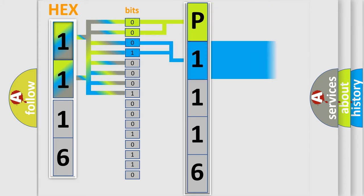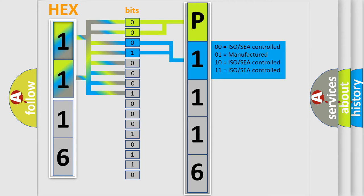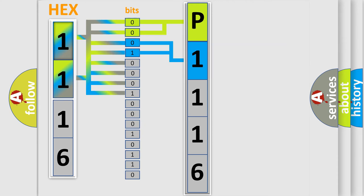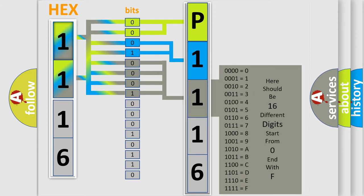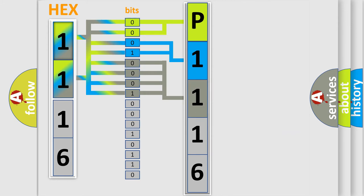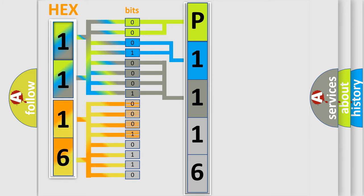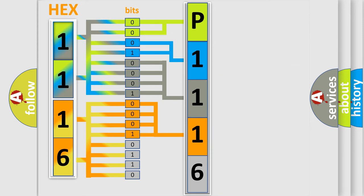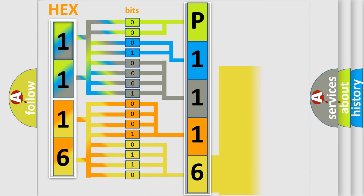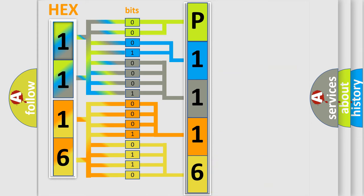The next two bits determine the second character. The last bits of the first byte define the third character of the code. The second byte is composed of a combination of eight bits. The first four bits determine the fourth character of the code, and the combination of the last four bits defines the fifth character. A single byte conceals 256 possible combinations.